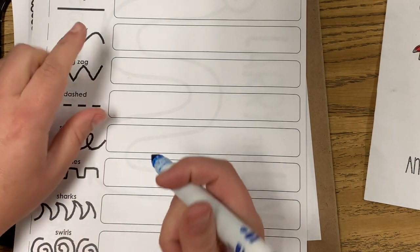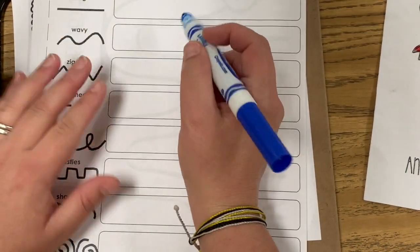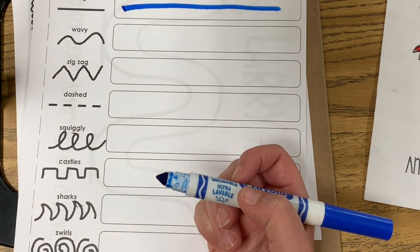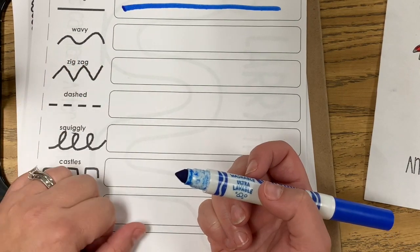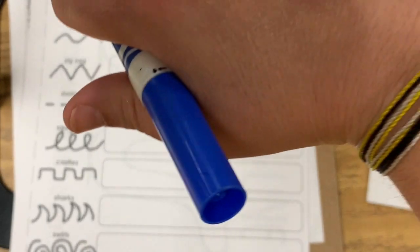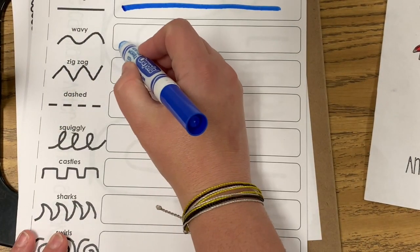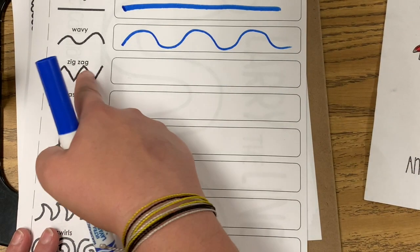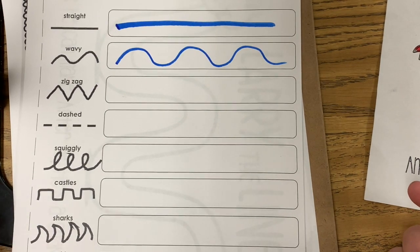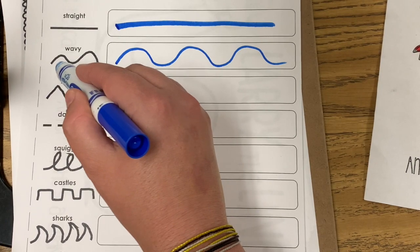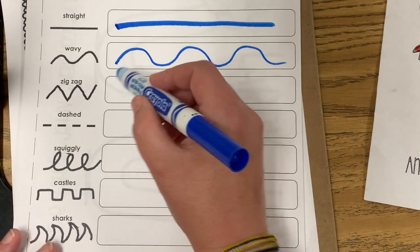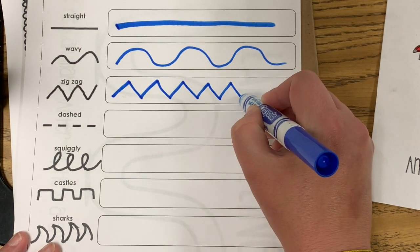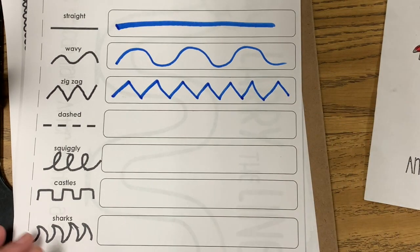I'm going to use blue. The first line is a straight line — that one's super easy, we just draw a straight line. Now let's do a wavy line. Wavy lines are kind of like the ocean, where it goes up in a soft curve and down with a soft curve. We're going to draw a wavy line from one side to the other. The next line is a zigzag line — it looks kind of like a mountain range, going up to a pointy top and down to a pointy bottom.